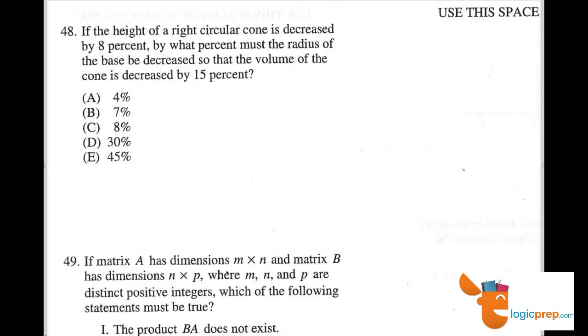Number 48. This is a tricky problem. If the height of a right circular cone is decreased by 8%, so we have the original and we're going to have a new. And I'm going to say let h equal the height of the original. So it was decreased by 8%. Well, if you decrease by 8%, then you're taking 92%, 0.92 of h. And that will be the new height.